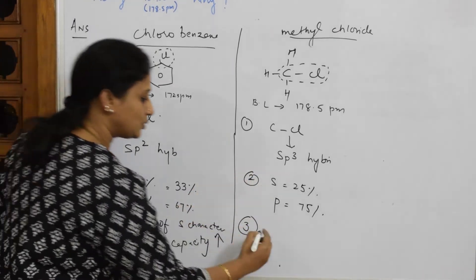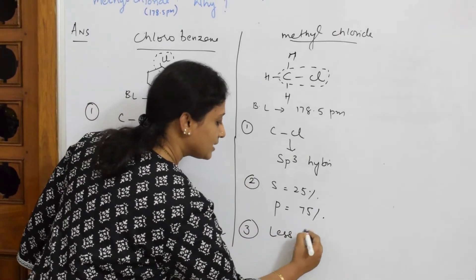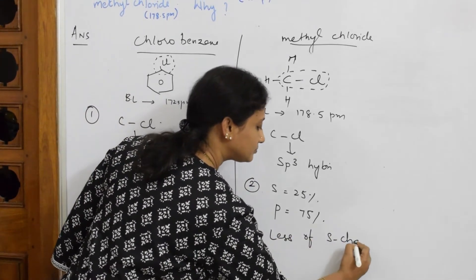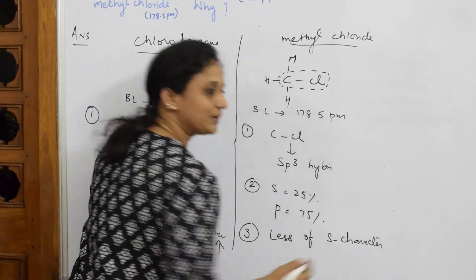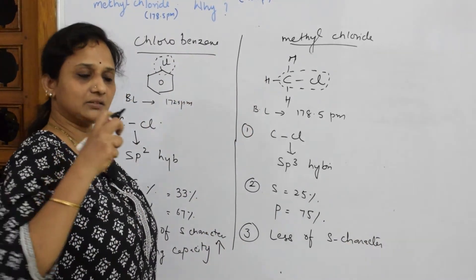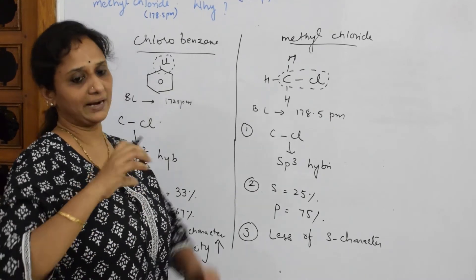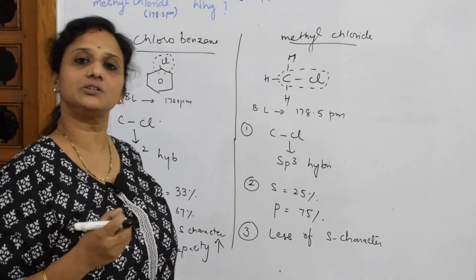Let us write, because I'm comparing these two, less of s character. What is happening? If there is higher s character, it's almost closer to the nucleus and your holding capacity towards the nucleus is very great, higher.